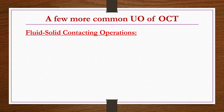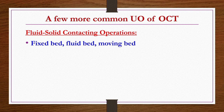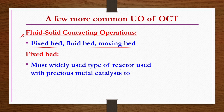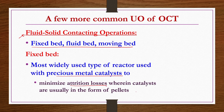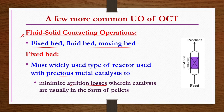Fluid-solid contacting operations: we are discussing a few — fixed bed, fluid bed, and moving bed, though these are not the only three types possible. Fixed bed is the most widely used type of reactor. It is used with precious metal catalysts to minimize attrition losses, where catalysts are usually in the form of pellets. Pictorially, fixed beds — also known as packed beds — are nothing but packing within a tubular column. Some portion of this tubular column is packed using perforated plates at both the bottom and top.